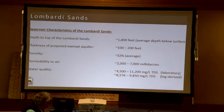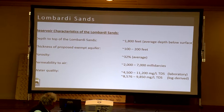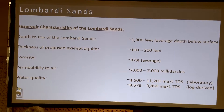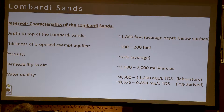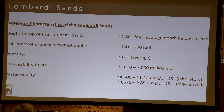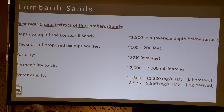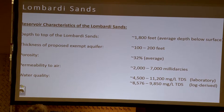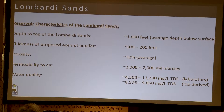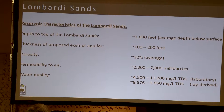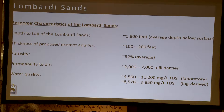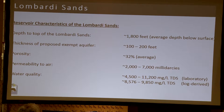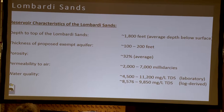Let's talk about the reservoir characteristics of the Lombardia. On average, it's about 1,800 feet below the ground surface. It's about 100 to 200 feet thick. It's relatively porous — porosity is about 35% — and permeability is 2,000 to 7,000 millidarcies. The water that comes out of the Lombardia sands has relatively high TDS. Laboratory samples indicate it's about 4,500 to 12,000 milligrams per liter total dissolved solids.